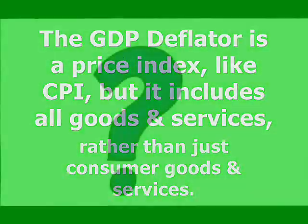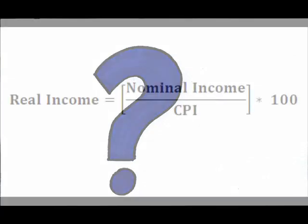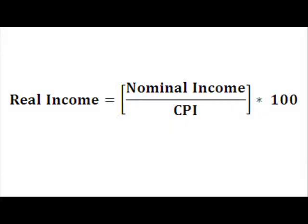Do you remember episode 17 when we looked at real and nominal versions of an individual's income? The real income was the nominal income adjusted for any price changes.